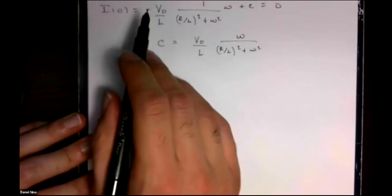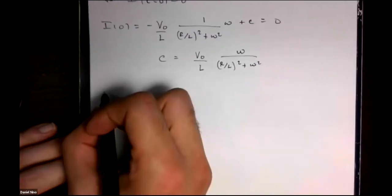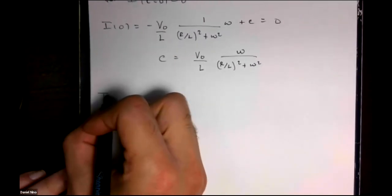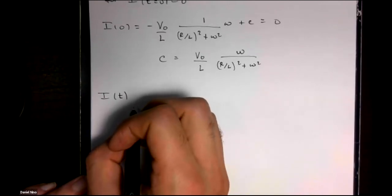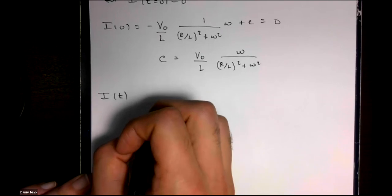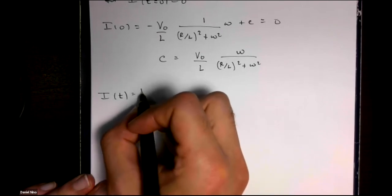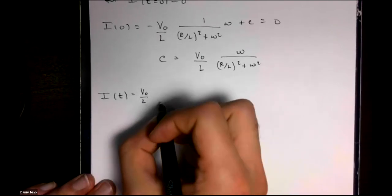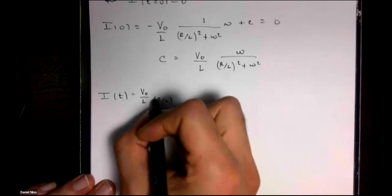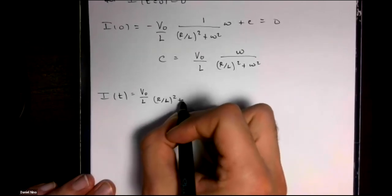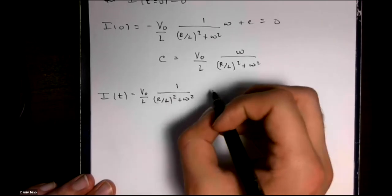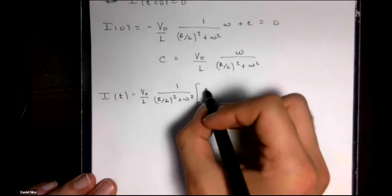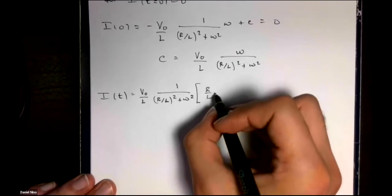So for this particular initial condition, we have the complete solution describing the behavior of the current in the circuit, which is given by the following expression.